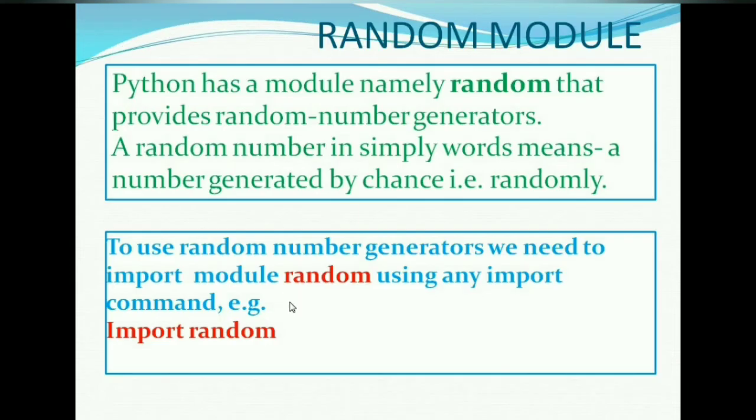Python has a module namely random that provides random number generators. What is a random number? A random number is simply a number generated by chance, i.e., randomly. And to use random number generators, we need to import the random module.